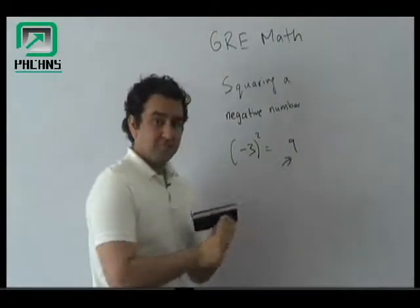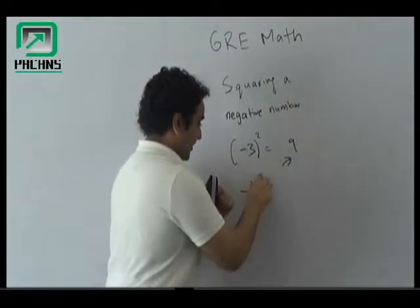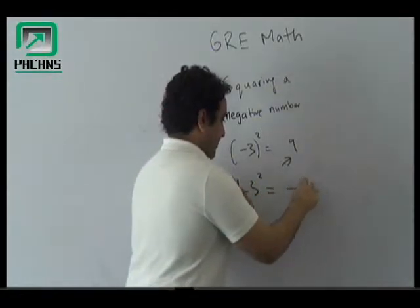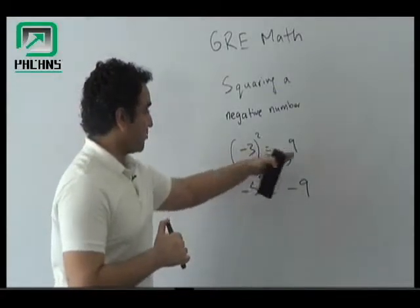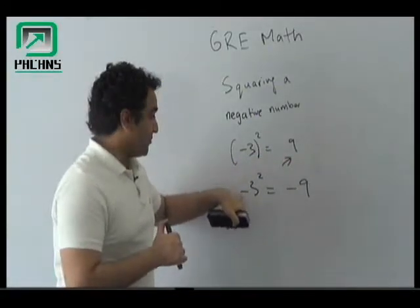And if you don't have this bracket, like if you have something like minus three squared, this thing would not be positive nine, it would be negative nine. So in order to make it positive, you have to have a bracket.